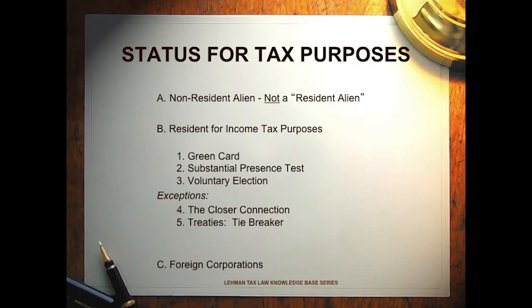There are certain exceptions. If a non-resident alien spends a full 182 days in 2016, and days in 2015 and 2014 that would push them over 182 days, but they have a closer connection to another country — their home is there, their business is there, their family is there — they can claim the closer connection exception. This means they spend a full 182 days here and are still not considered a resident alien taxable on their worldwide income.